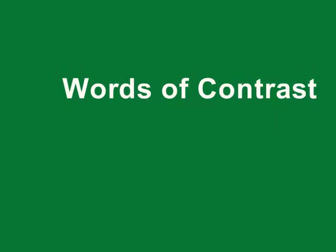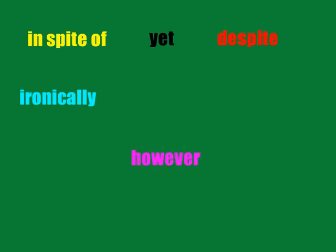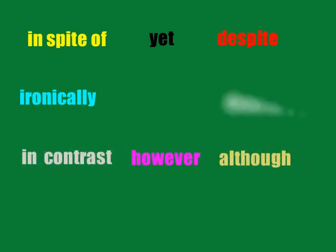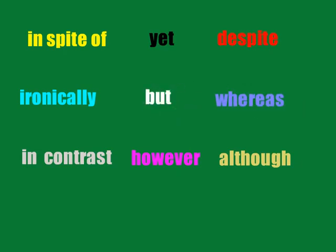The other thing to look out for with sentence completion questions are words of contrast. These are words that turn the sentence back on itself — it will be going along in one direction, then a word of contrast will turn it in a different direction. Words of contrast include: yet, ironically, in spite of, despite, however, in contrast, although, whereas, and but. Keep an eye out for these words of contrast — they're crucial in working sentence completion questions out.